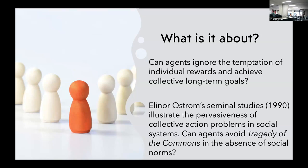Elinor Ostrom's studies have worked on collective action problems quite a lot, and these are often modeled as, for example, the prisoner's dilemma, games of trust, or public goods schemes. What happens is if we think of our own personal good, we maximize our personal rewards without thinking about society as a whole, and this may lead to situations like the tragedy of the commons — where a limited resource gets depleted and none of us can get enough, and we ultimately die.